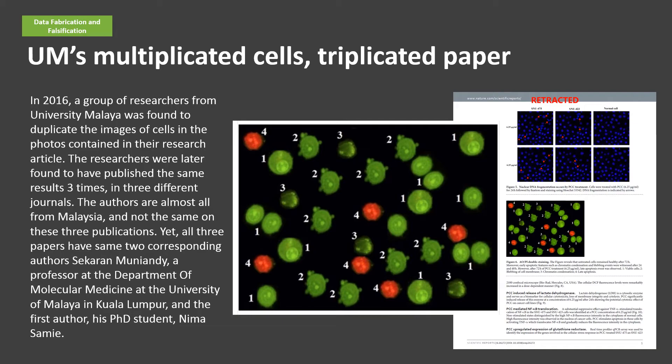In 2016, a group of researchers from University Malaya was found to have duplicated images of cells in the photos contained in their research article. The researchers were later found to have published the same results three times in three different journals. The authors are almost all from Malaysia and not the same on these three publications, yet all three papers share the same two corresponding authors: Sekharan Muniandi, a professor at the Department of Molecular Medicine at the University of Malaya in Kuala Lumpur, and his PhD student Nima Sami.